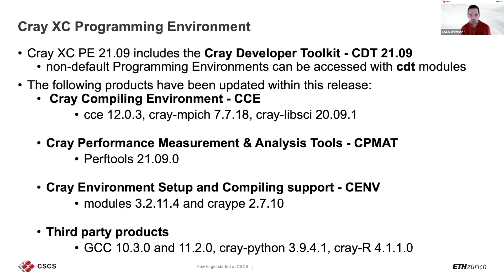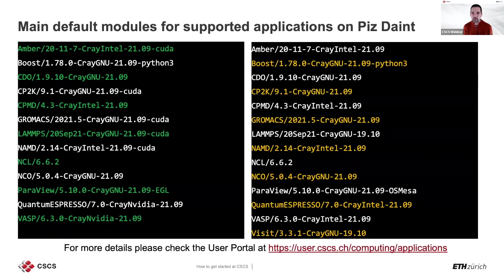The Cray Compiler Environment (CCE) is at the core of the Cray programming environment, including the Cray MPI and Cray LibSci — a set of libraries for scientific applications. We also provide Cray Performance Measurement and Analysis Tools, in particular PerfTools version 21.09. Other components include the Cray PE module providing the modules framework version 3.2.11.4. For PrgEnv-gnu, the GCC compiler latest versions are 10.3.0 and 11.2.0, plus Cray Python supporting only Python 3.